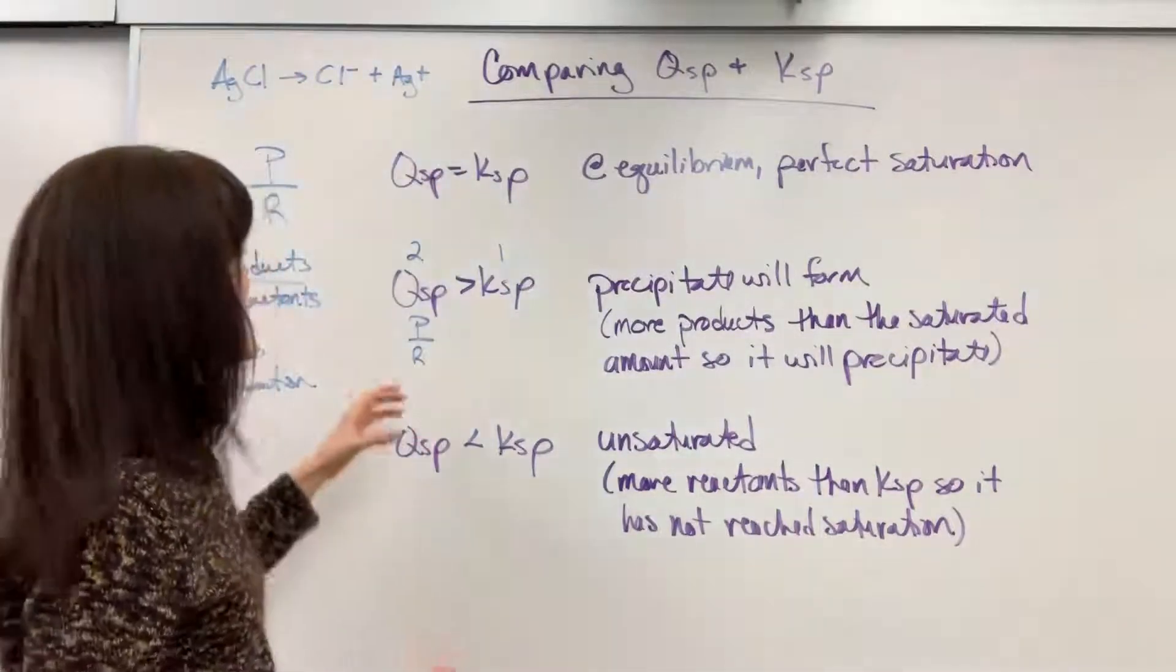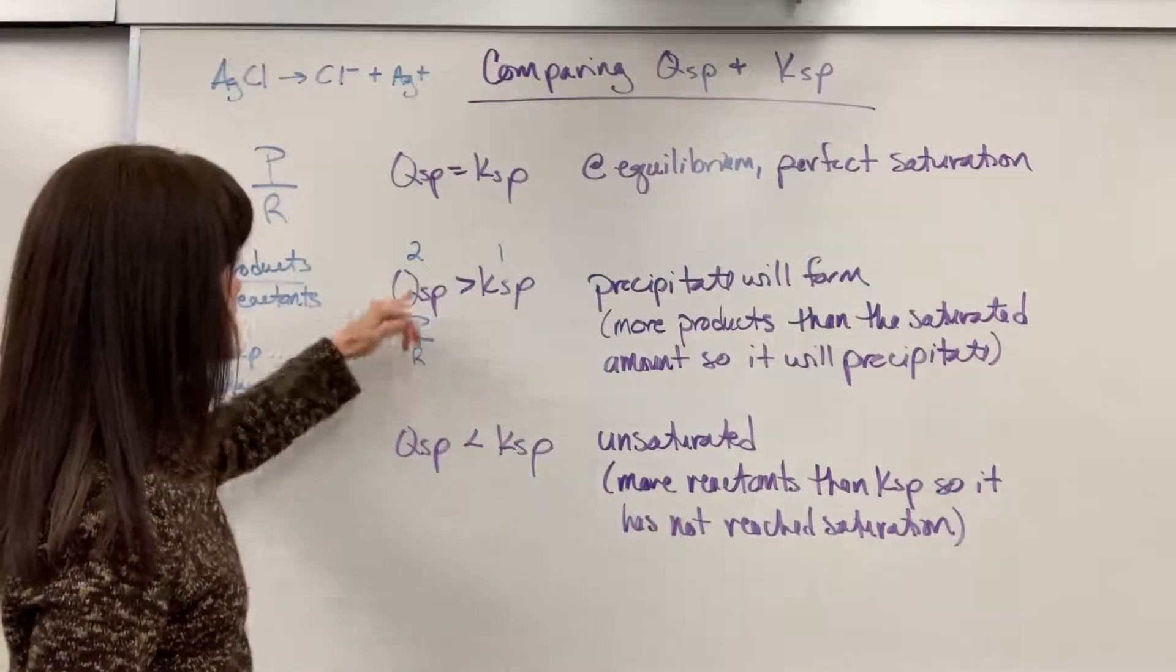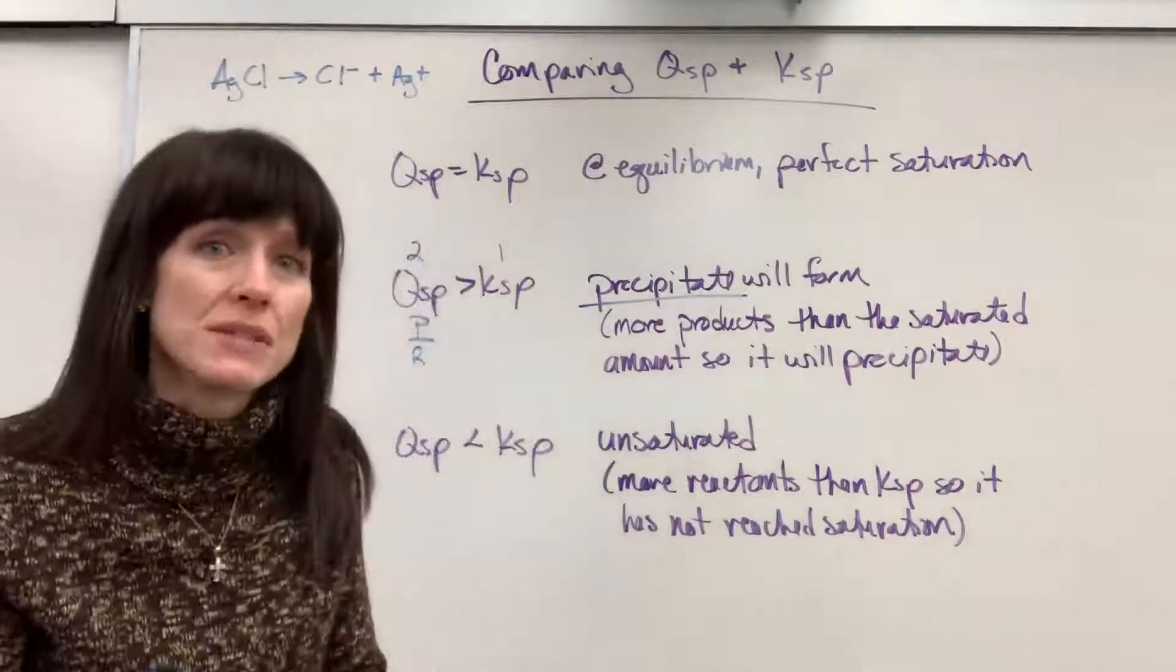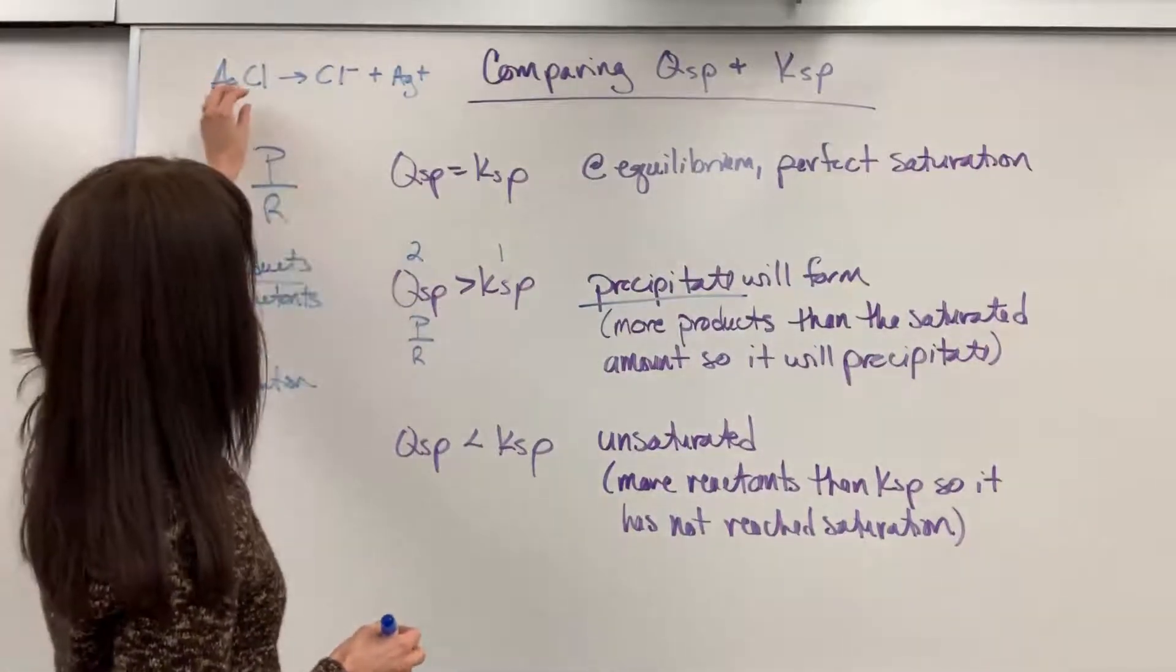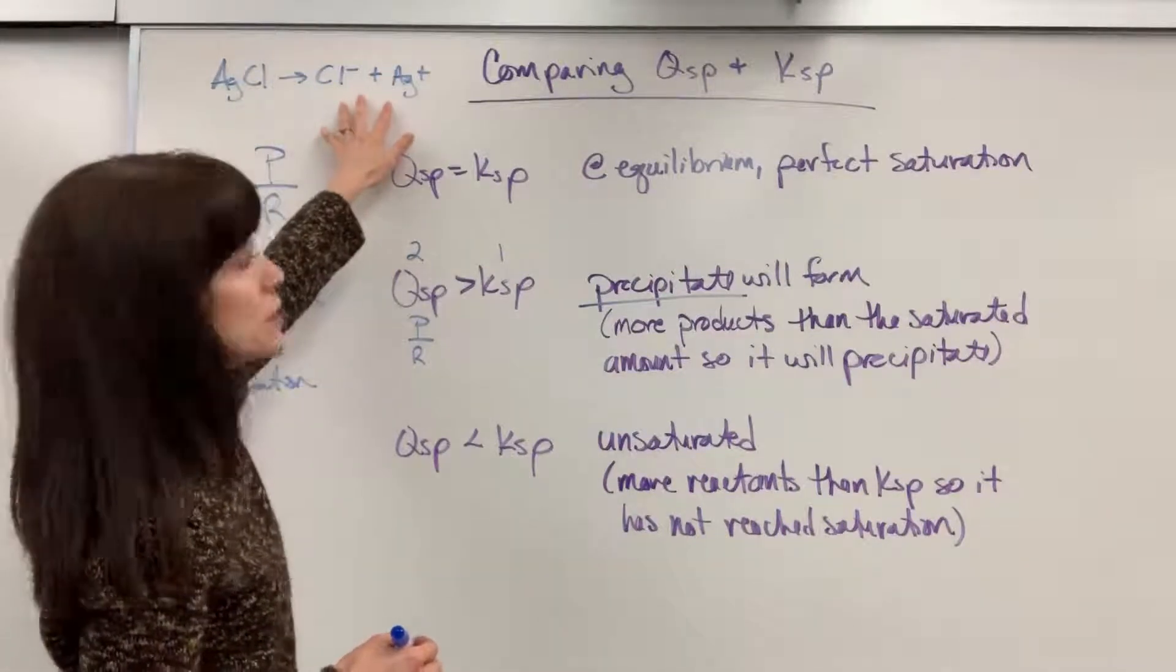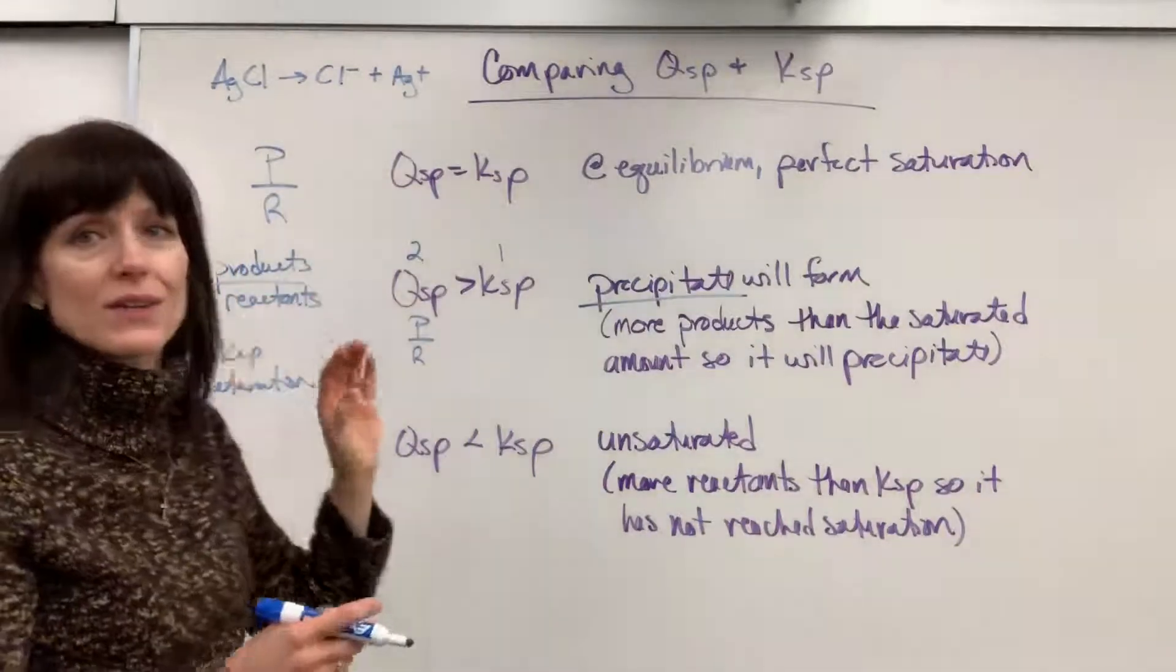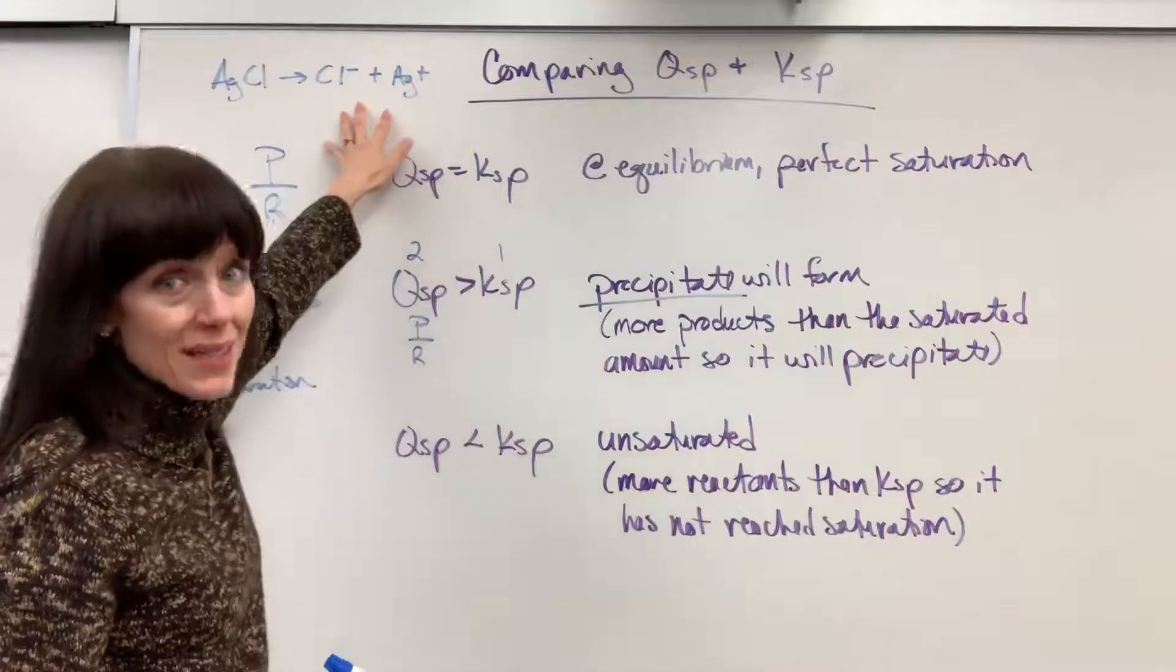That means if you're given information of, hey, you have this amount of products, this amount of reactants, and it's greater than KSP, it means you're going to have a precipitate form. You're going to put so much in of this particular reactant that when it breaks apart, it's going to produce the products. And because this is bigger, you're thinking, oh, keep producing, keep producing. But it hits a maximum. It hits a saturation.